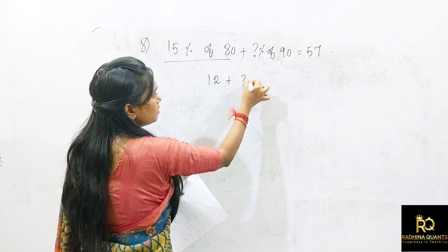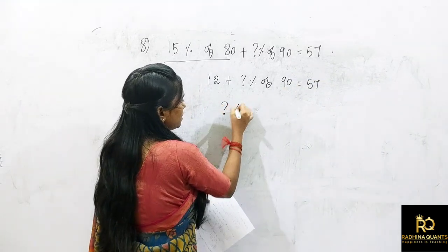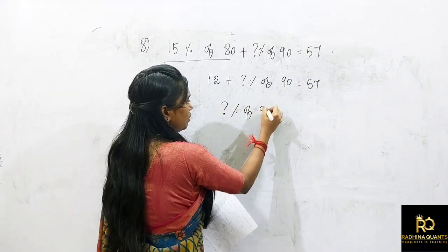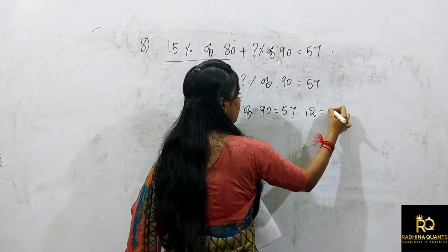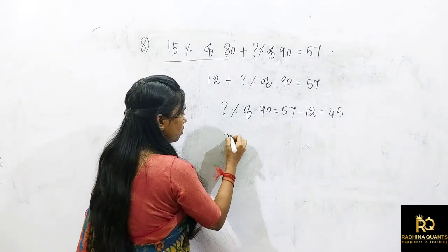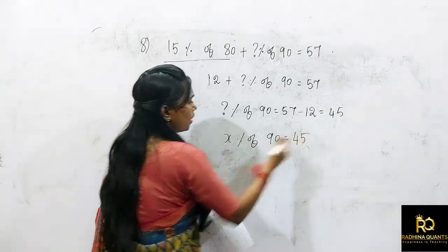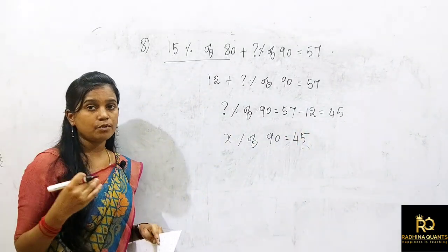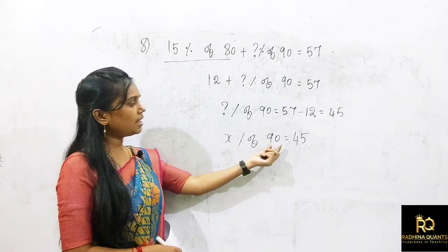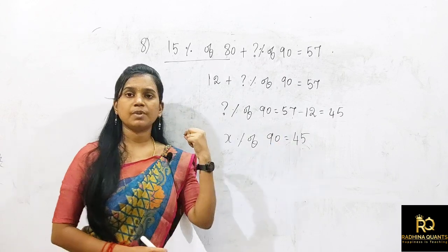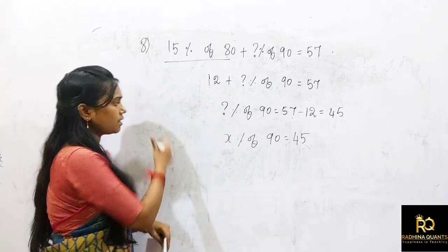So question mark percentage of 90 equals 57 minus 12 = 45. Therefore x% of 90 = 45. Now x/100 × 90 = 45. Since 50% of 90 is 45, x equals 50.